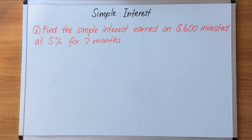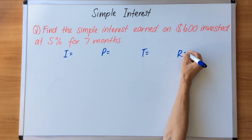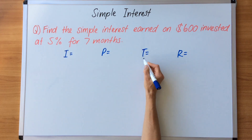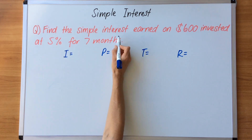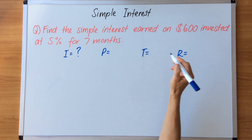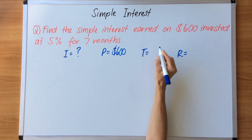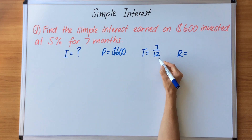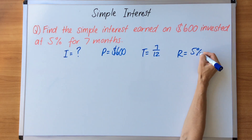We now have another question: find the simple interest earned on $600 invested at five percent for seven months. Write down I equals, P equals, T equals, and R equals. The interest is what we're finding. The principal is $600. The time is seven months, written as the fraction 7/12 because we're dealing with a part of a year — seven months out of twelve. The rate is five percent.